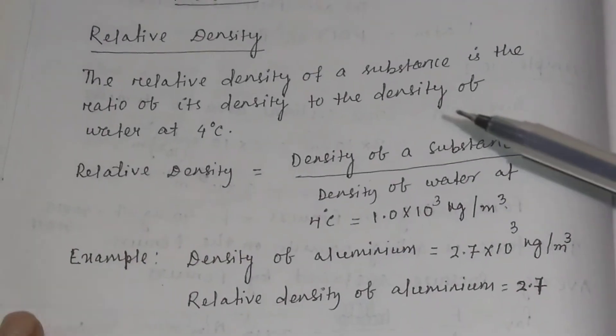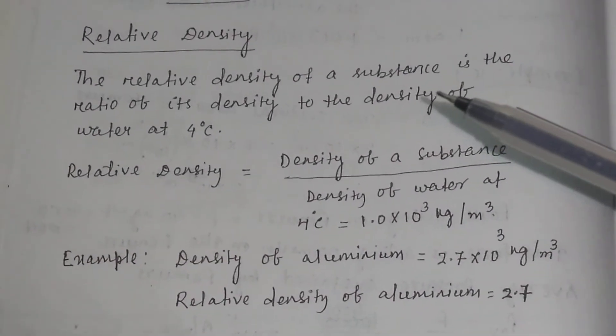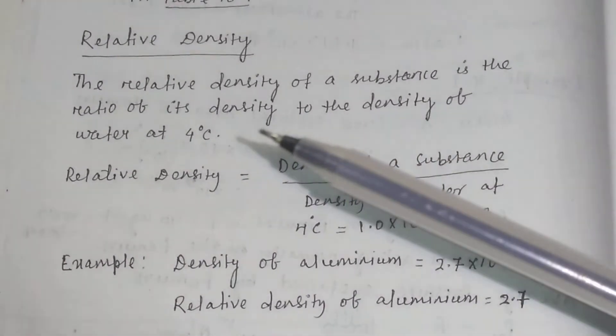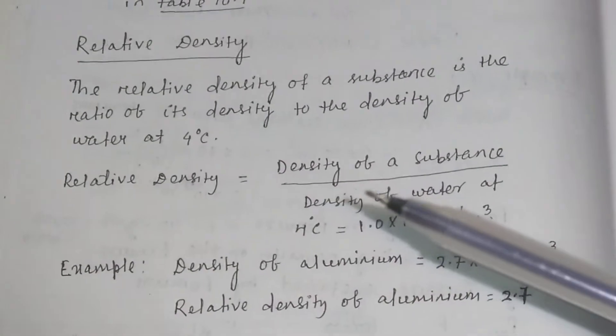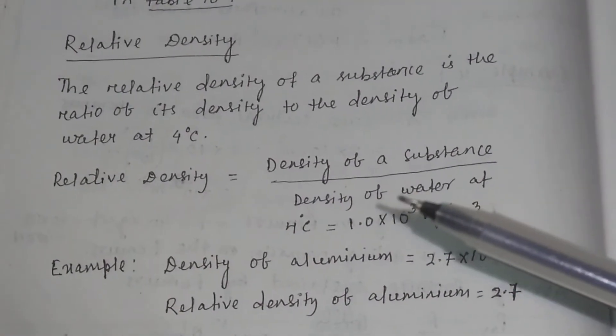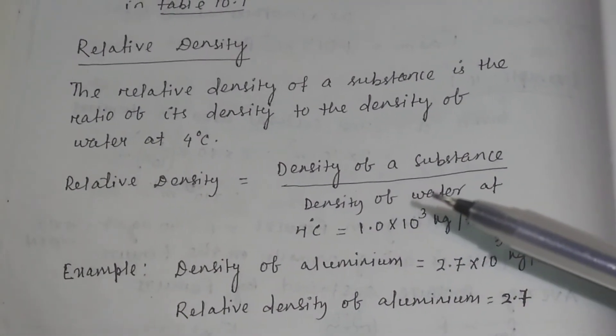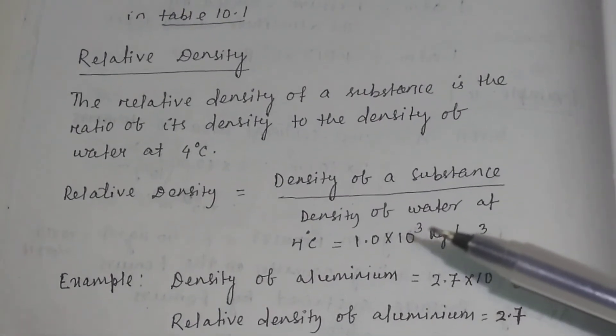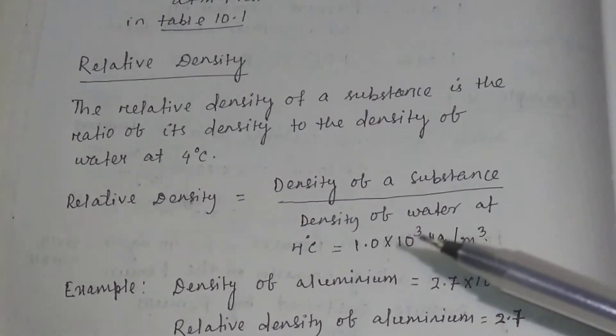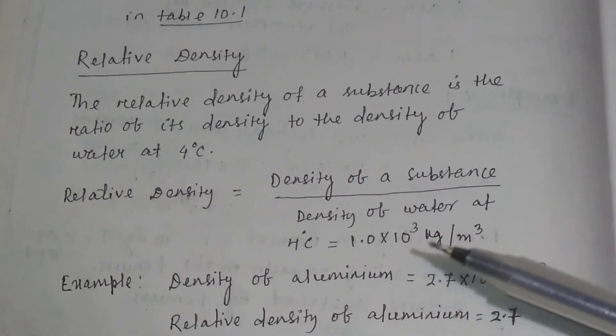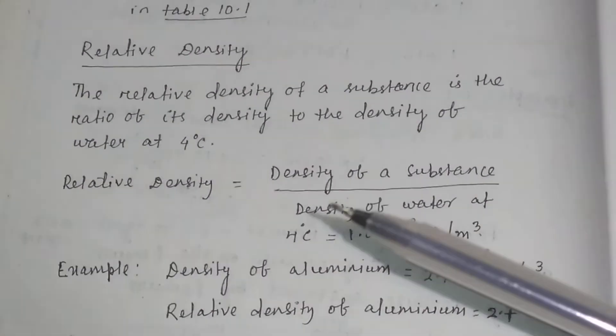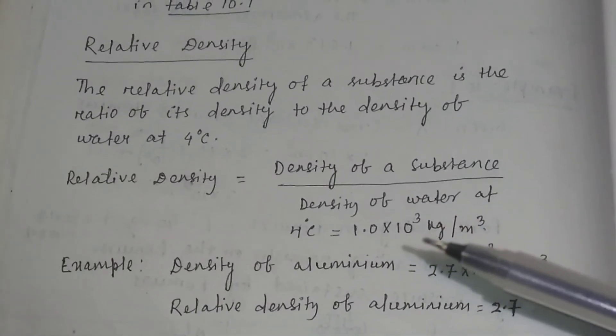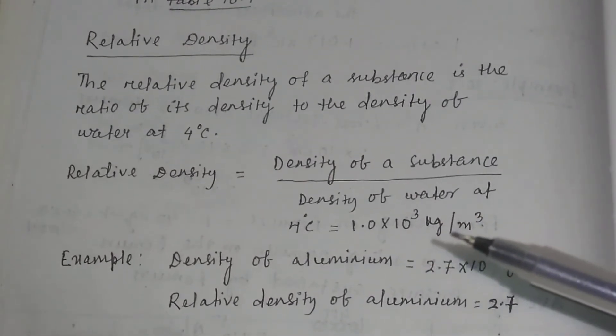What is relative density? Relative density of a substance is the ratio of its density to the density of water at 4 degree centigrade. Relative density is equal to density of a substance divided by density of water at 4 degree centigrade, which is generally equal to 1.0 into 10 to the power 3 kg per meter cube. You should remember that density of water at 4 degree centigrade is 1 into 10 to the power 3 kg per meter cube.